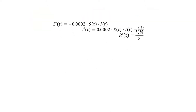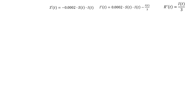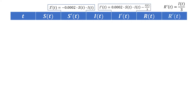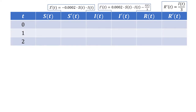Now let's start organizing our information. We'll make a table to record our information, with columns for the number of days since we started recording, the number of susceptible, infected, and removed individuals, and the rate at which each of those groups is changing in people per day. We'll compute values for 0, 1, and 2 days.